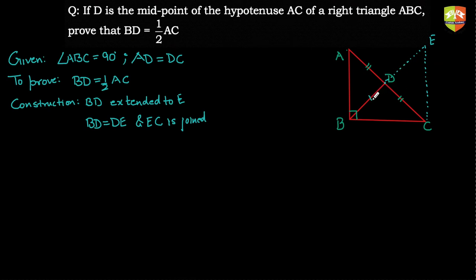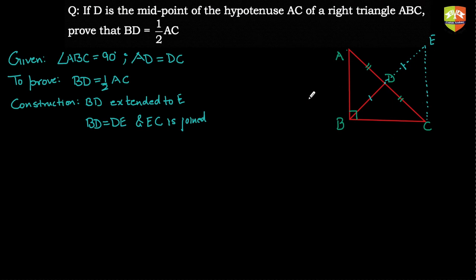The moment BD equals DE, triangles ADB and CDE become congruent. From that congruence, AB equals EC. Then in triangles ABC and EBC, if AB equals EC, both angles at B and C are 90 degrees, and BC is common, those two triangles will be congruent, making AC equal to BE. That is our line of approach — now let's prove triangle ADB is congruent to triangle CDE.